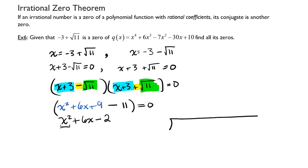You have to do polynomial long division on these because this is a degree 2 as your divisor. So my divisor is x squared plus 6x minus 2. My dividend is x to the 4th plus 6x to the 3rd minus 7x squared minus 30x plus 10. I'm going to use some scratch paper here over on the side.